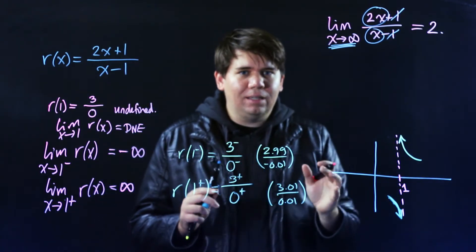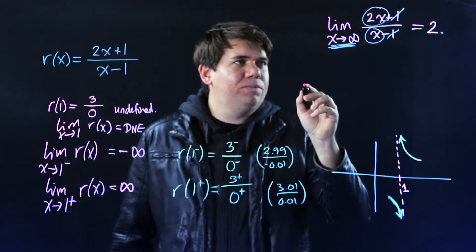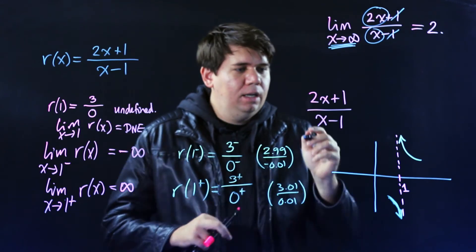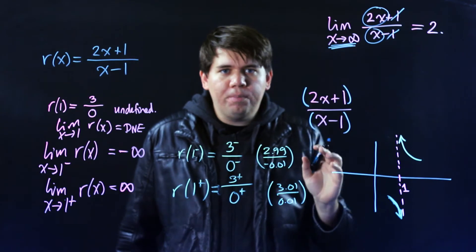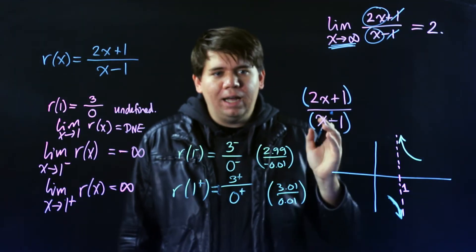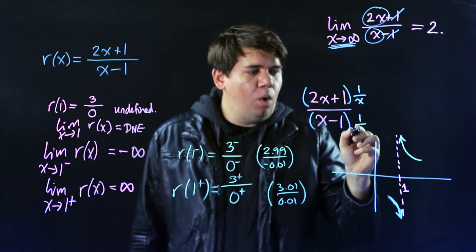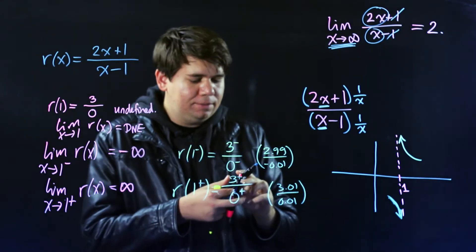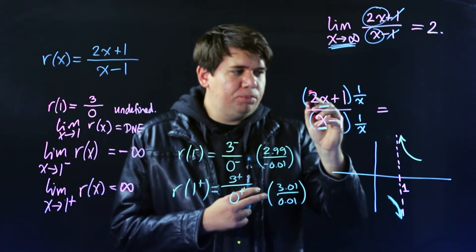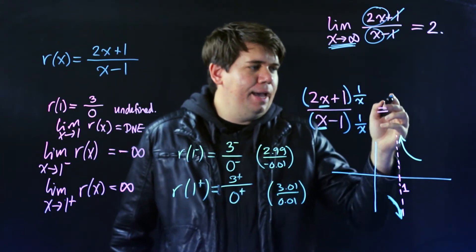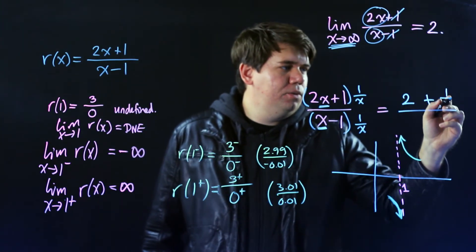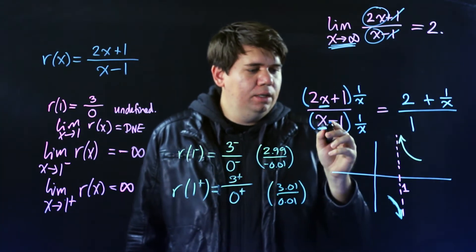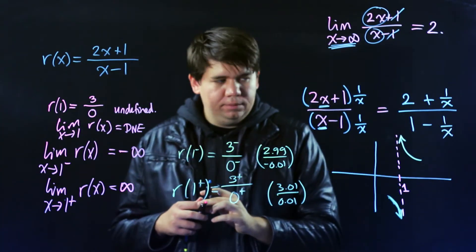Let's make that more rigorous. We have (2x + 1)/(x - 1), and I'm going to multiply the top and bottom by 1/x — dividing both by x. On top, 2x/x is just 2, plus 1/x. On the bottom, x/x is 1, minus 1/x. So the expression becomes (2 + 1/x)/(1 - 1/x).